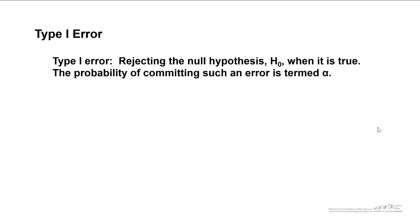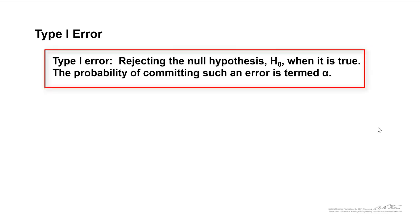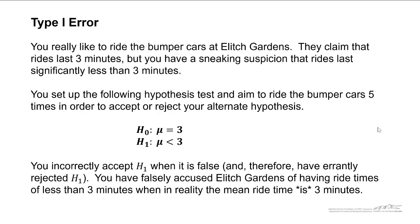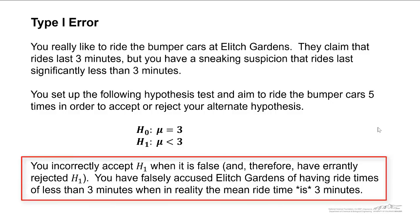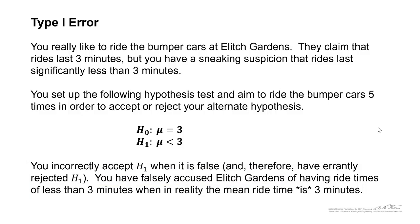So a type 1 error is rejecting the null hypothesis when in fact it is true — in other words, we accept the alternate hypothesis when it is false. In our bumper cars at Elitch's example, you think that the true mean is significantly less than three minutes. An example of a type 1 error would be incorrectly accepting the alternate hypothesis when in fact it is false — you have falsely accused Elitch Gardens of having ride times of less than three minutes when in reality the mean time really is three minutes.